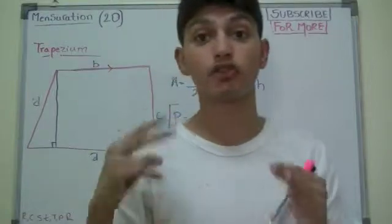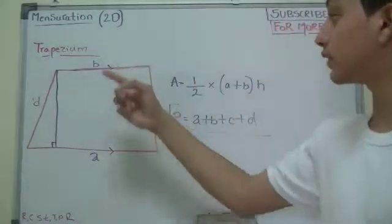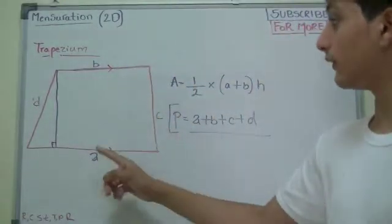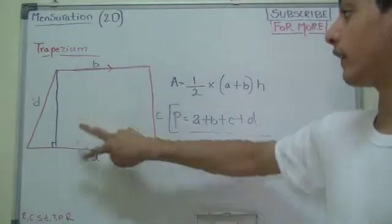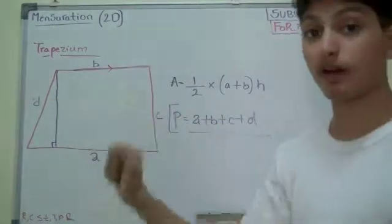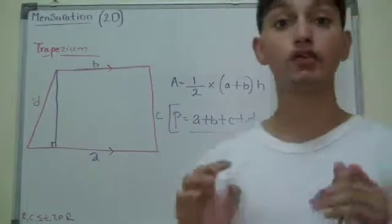Because of this, we have two parallel lines, which is this one and this one. Here we labeled A and B. Both A and B are parallel lines, meaning they do not intersect.